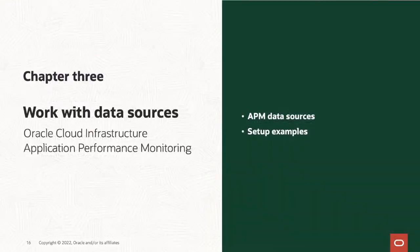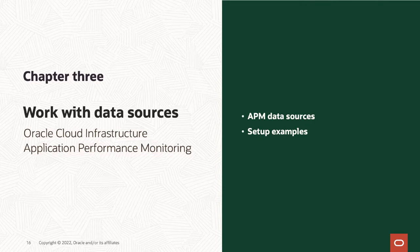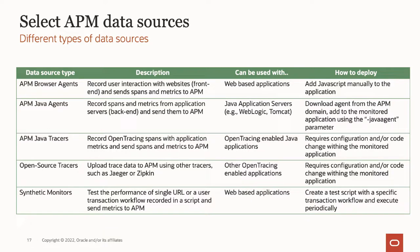Moving on to chapter three: working with data sources. APM provides data sources for different use cases. The term data source in APM refers to programs that gather monitoring data from target applications and upload it to APM. APM has several different types of data sources: the APM browser agent, Java agent, tracer, or synthetic monitors. Each data source has different use cases and deployment steps. The APM browser agent is used in the front end of web applications to collect spans and metrics — you need to manually edit a file such as index.html to add a JavaScript statement to instrument the browser agent.